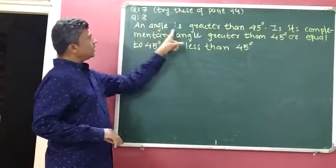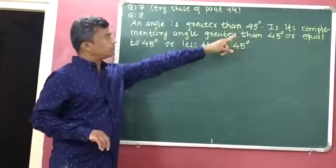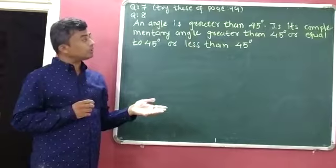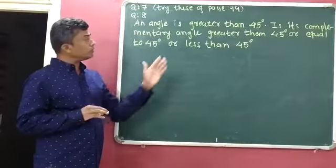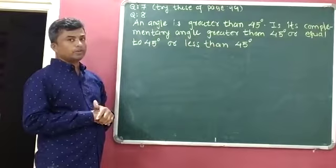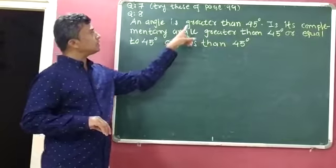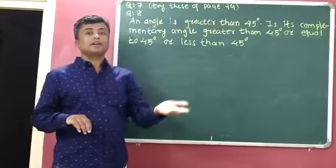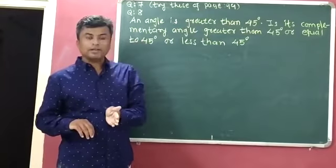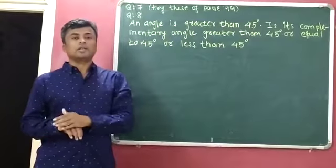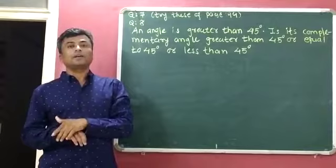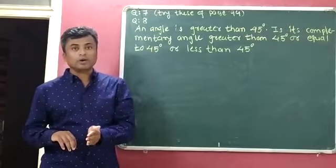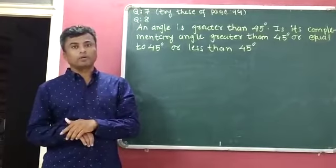Question number 8: an angle is greater than 45 degrees. Is its complementary angle greater than 45 degrees, equal to 45 degrees, or less than 45 degrees? We have to consider one angle which is greater than 45 degrees, identify its complementary angle, and then check whether it is greater than, equal to, or less than 45 degrees.